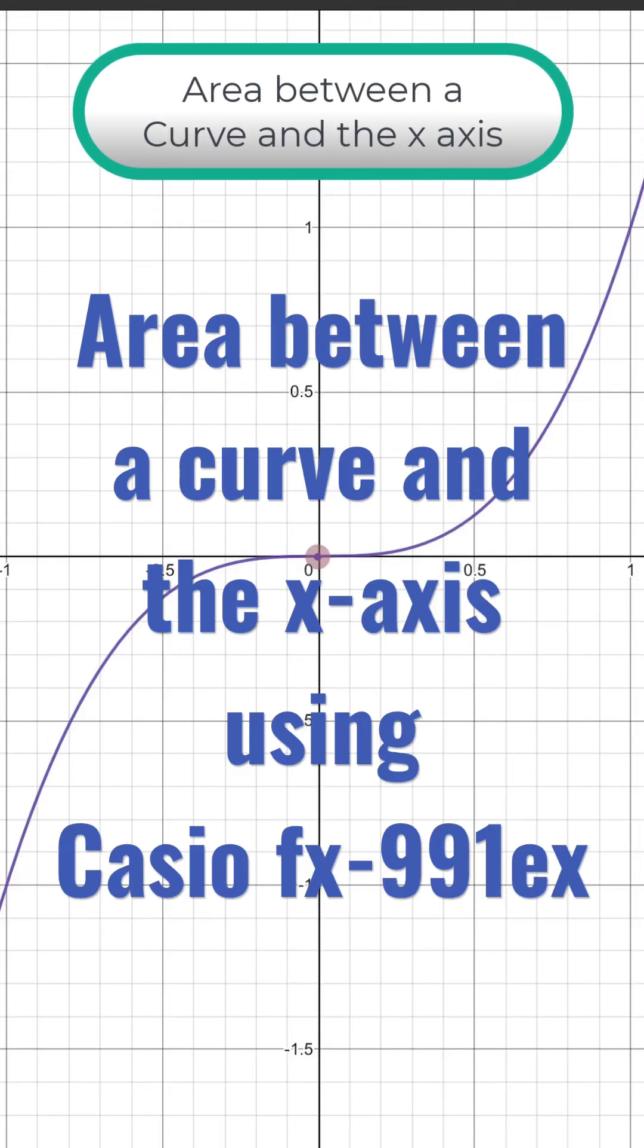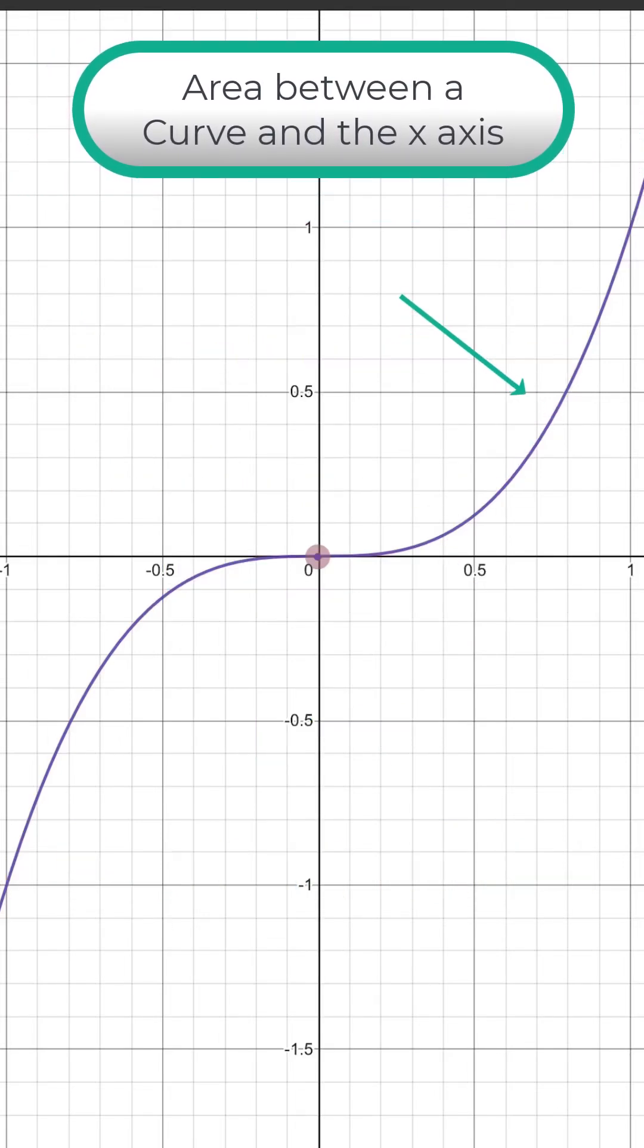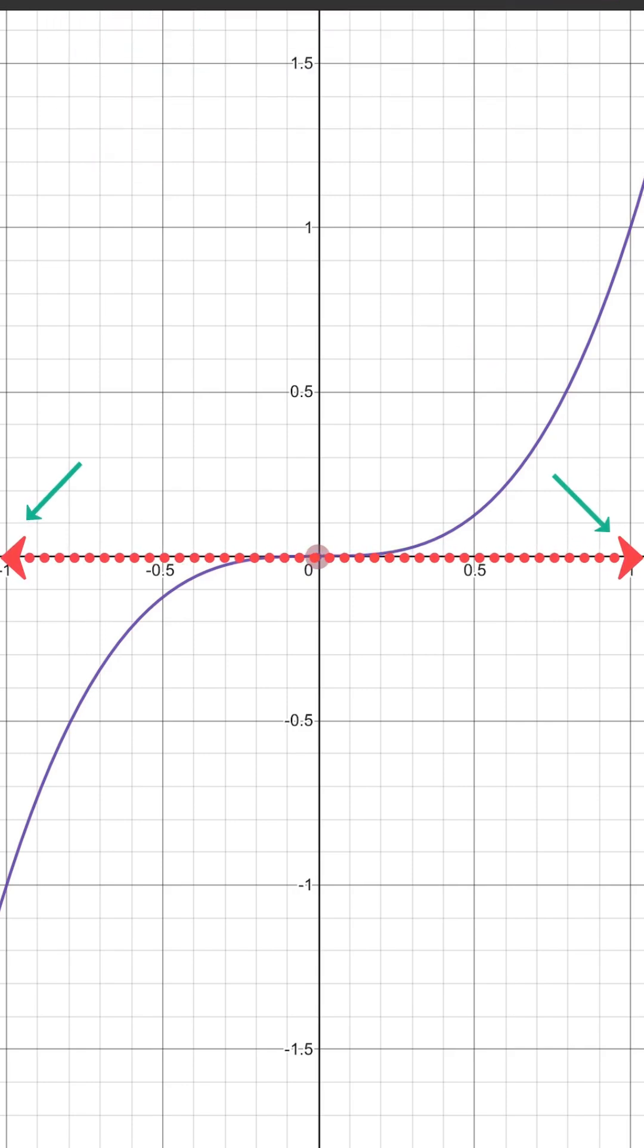If you want to find the area between the curve of the function x cubed and the x-axis between minus 1 and 1 using integration, first you need to split the interval into two parts.